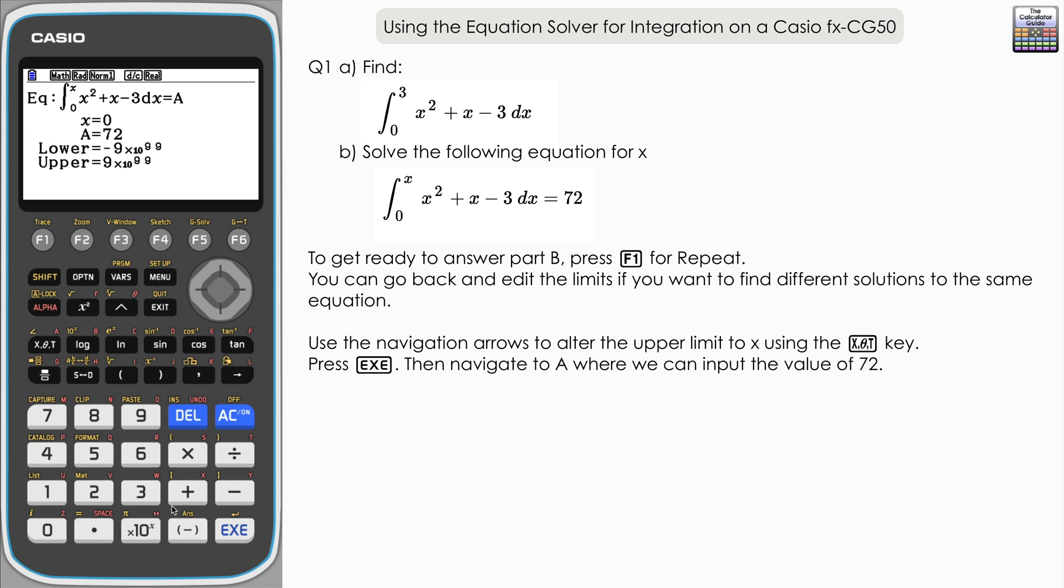Press execute, and what we need to do now is solve for X. Navigate back up to X and press execute. This should solve to find the value of X, and you can see here that our value of X is 6. If you have an upper limit of 6, that will give an answer of 72.